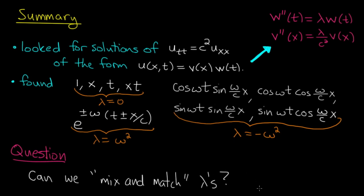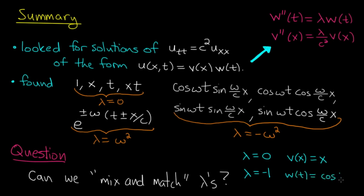I'll end with a question to test your understanding. Can we mix and match values of lambda? Suppose we choose lambda = 0 and solve the v equation, getting v = x. Then we choose lambda = −1, solve the w equation, and get w = cos(t). Is the product v · w = x cos(t) a solution to the wave equation? If not, why not — what goes wrong when we mix different values of lambda?